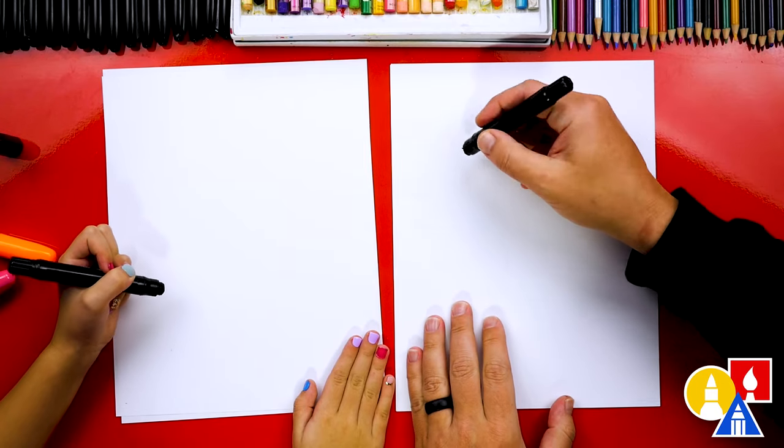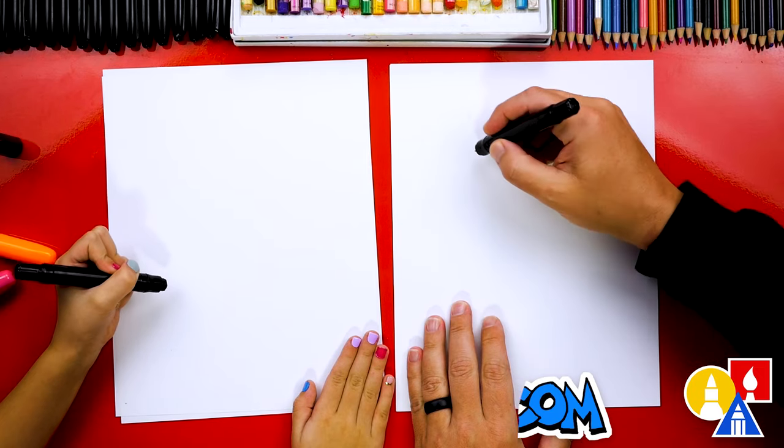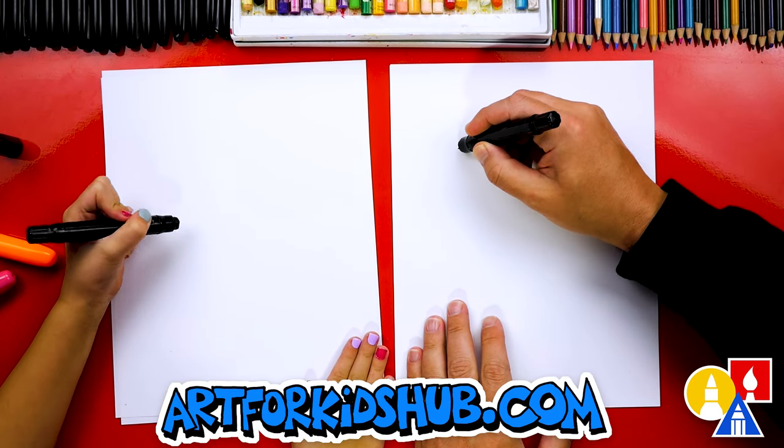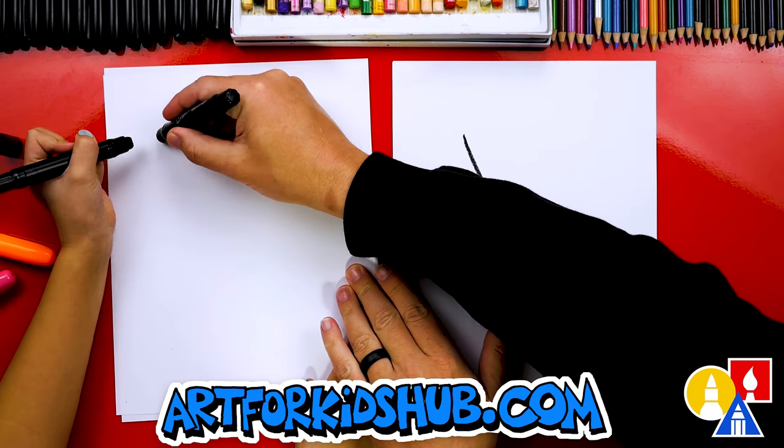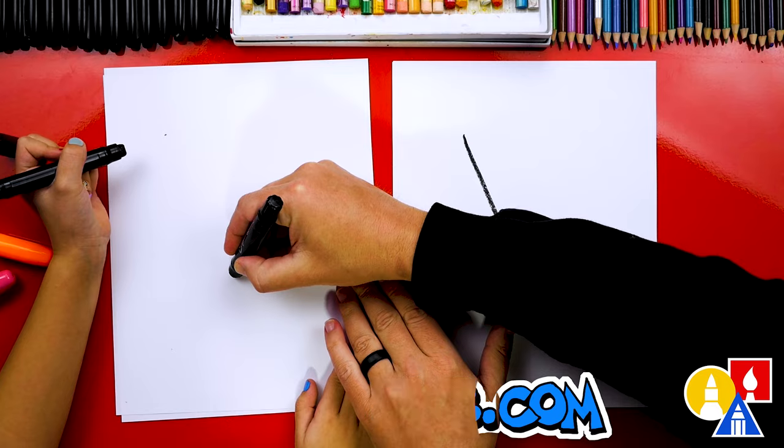Let's first use our black crayon and we're going to write the letter V. We're going to start over here on the top left of our paper and come down to the middle of our paper. Do you want to do that? You can start up here and then come down to the middle.